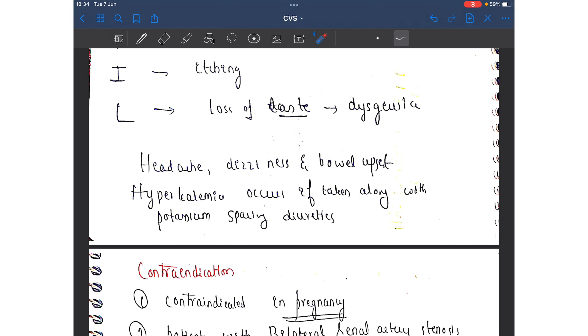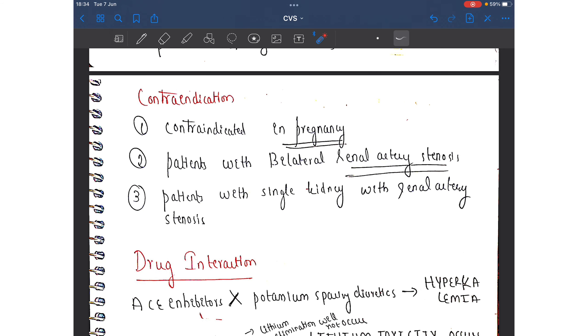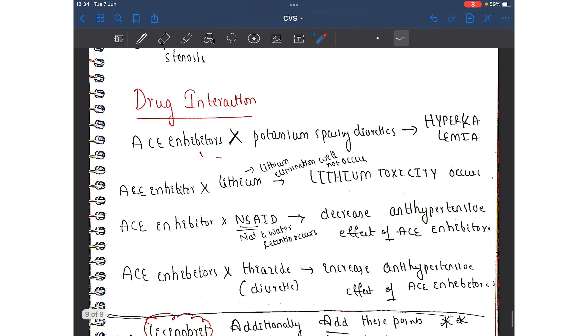Hyperkalemia occurs if taken along with potassium-sparing diuretics. Next is contraindications. ACE inhibitors are contraindicated because they produce teratogenic effect. They are not indicated in pregnancy. In case of patients with bilateral renal artery stenosis, ACE inhibitors are contraindicated.